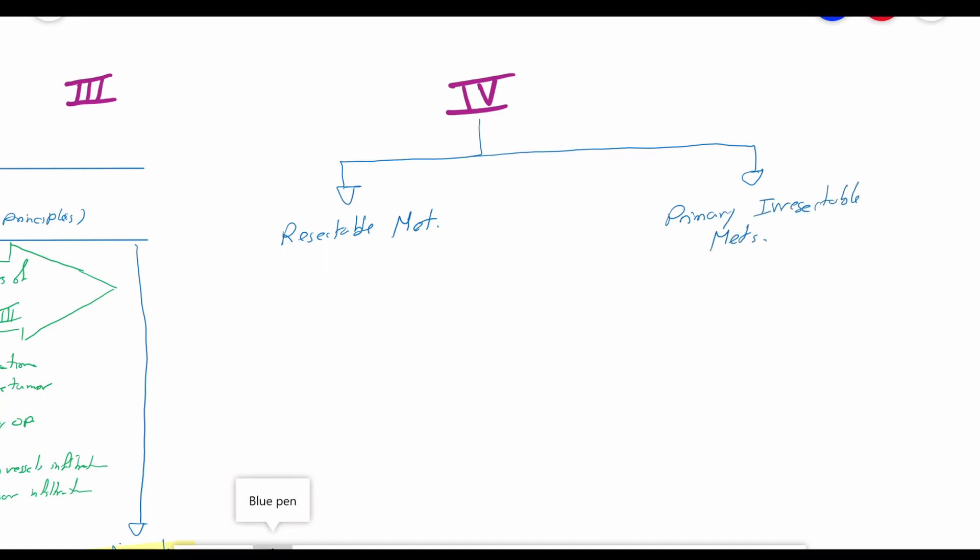In resectable metastases of lung and liver, it can be managed either by primary resection with adjuvant chemotherapy or 3-month chemotherapy then resection then adjuvant chemotherapy.